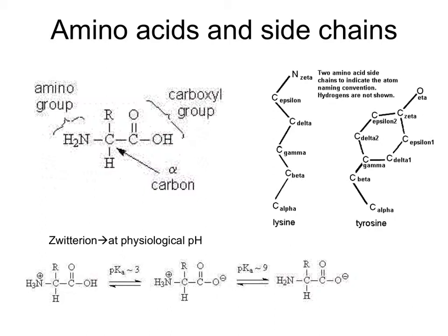For example, tyrosine is alpha, beta, gamma, delta 1, delta 2, epsilon 1 and 2, zeta and eta. Under physiological pHs, amino acids exist as a zwitterion — the pK of the carboxy is 3 and the pK of the amine is 9.